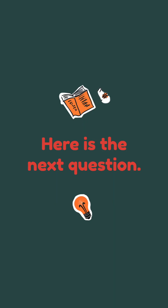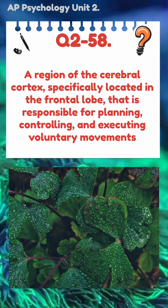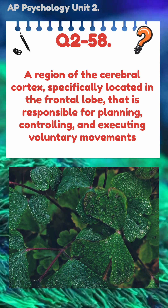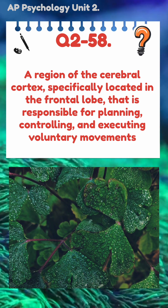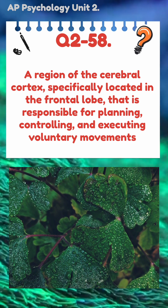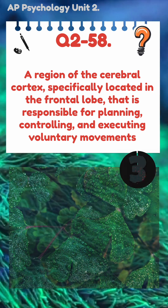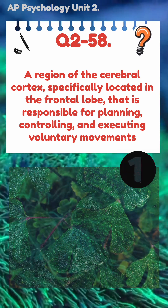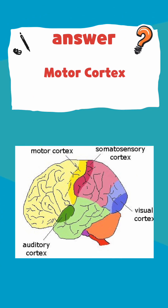Here's the next question. A region of the cerebral cortex, specifically located in the frontal lobe, that is responsible for planning, controlling, and executing voluntary movements. The answer is Motor Cortex.